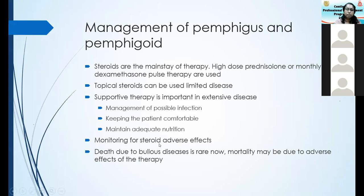A GP can play a major role in monitoring for steroid adverse effects — most of these patients are on steroids for a long period. Remember, about 30 to 40 years ago, pemphigus vulgaris was like a death warrant — a lot of patients died. But with high-dose steroids and the introduction of dexamethasone-cyclophosphamide pulses, mortality due to pemphigus has come down — though now mortality may be due to the effects of high-dose steroids. Patients with pemphigus and pemphigoid have to be monitored and followed up very carefully.